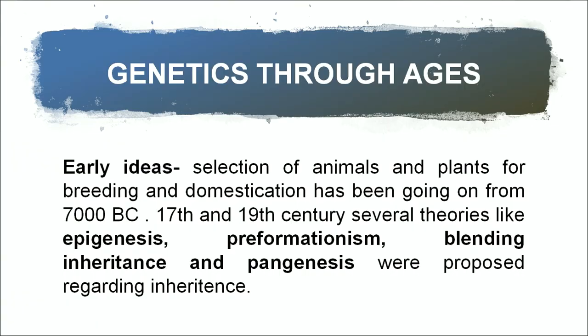In early ideas, since the time of 7000 to 8000 BC, people were selecting animals and plants. Plants and animals were selected based on desired characters like high milk production and high yielding varieties for domestication or cultivation. Various theories were also proposed like epigenesis, preformationism, blending inheritance, and pangenesis.